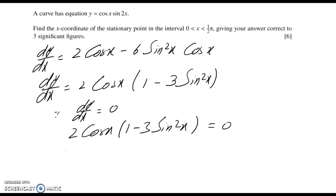So either 2 cos x = 0 or 1 - 3sin²x = 0. This gives cos x = 0 or sin²x = 1/3.